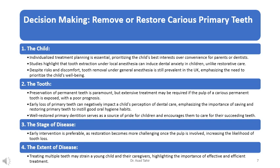The tooth: preservation of permanent teeth is paramount. Treatment may be required if the pulp of a carious permanent tooth is exposed, with a poor prognosis. Early loss of primary teeth can negatively impact a child's perception of dental care, emphasizing the importance of saving and restoring primary teeth to instill good oral hygiene habits. Well-restored primary dentition is a source of pride for children and encourages them to care for their succeeding teeth. The stage of disease: early intervention is preferable, as restoration becomes more challenging once the pulp is involved.